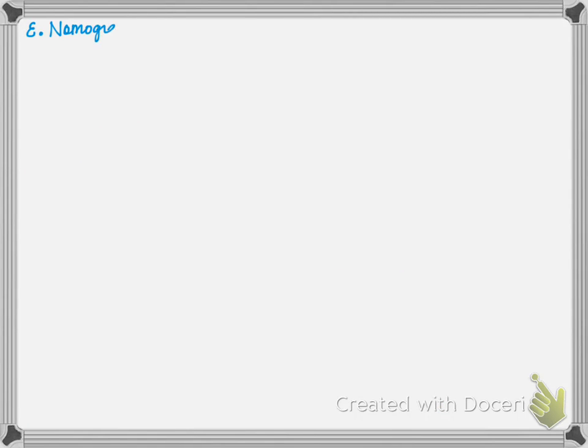The next method is based on a nomograph. This is seldom used, but in Orange County, San Bernardino County, they use this method to calculate the initial travel time for a specific sub-area. The way it works is you calculate the length of your initial watershed. Then, you determine what the elevation difference is, and you create a straight line.